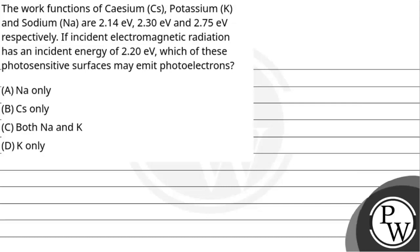Hello, let's hear about the questions. The question says the work function of cesium, potassium, and sodium are 2.14 electron volt, 2.30 electron volt, and 2.75 electron volt respectively. If the incident electromagnetic radiation has an incident energy of 2.20 electron volt, which of these photosensitive surfaces may emit photoelectrons?